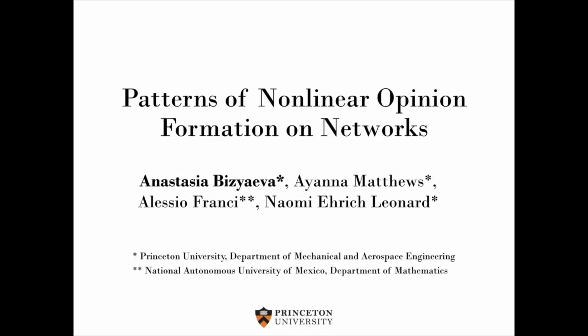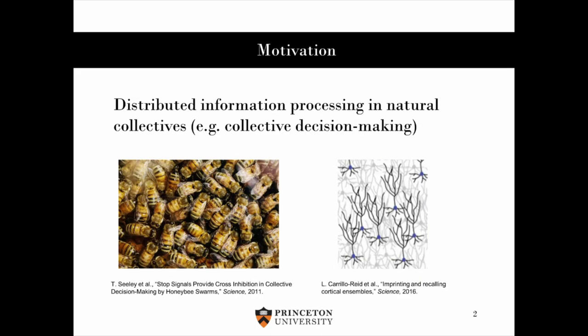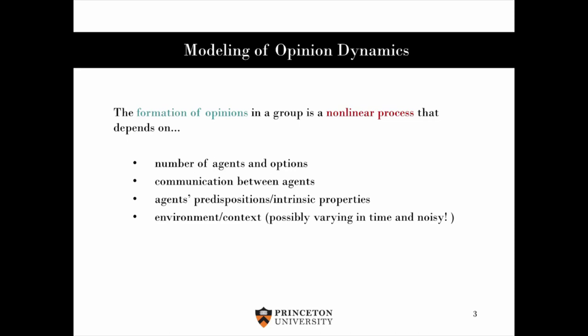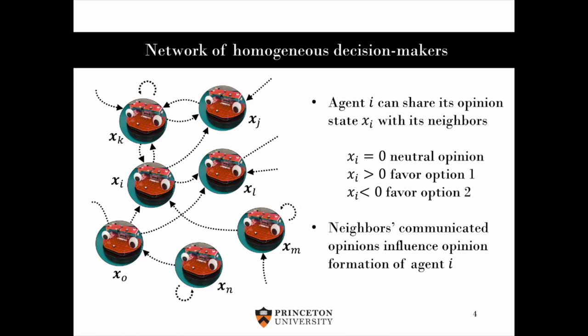Hi there. My name is Anastasia Bizyaeva. I am a fourth-year PhD student in Professor Naomi Leonard's lab at Princeton. And in the next couple of minutes, I will briefly introduce you to our paper in which we study the relationship between graph structure and emergent patterns of nonlinear opinion formation. In this work, we are motivated by distributed information processing performed by natural groups, such as animals, social insects like the honeybees pictured here, and neuronal collectives. We study opinion formation in a group of communicating agents about various options, topics, or candidates, which we model as a nonlinear evidence integration process. Today, we will be considering a network of homogeneous decision makers which are evaluating two options.